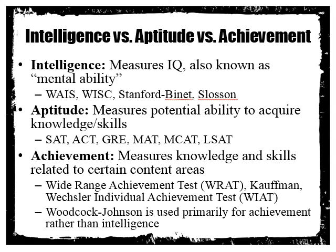Intelligence testing measures what's known as IQ, or intelligence quotient, also known as mental ability. Tests that measure this include the Wechsler Adult Intelligence Scale, the Wechsler Intelligence Scale for Children, the Stanford-Binet, and the Slosson, which is a smaller, more reduced intellectual test. Basically, we're trying to get at a person's verbal IQ — their ability to process verbal information, their understanding, their fund of knowledge — as well as their processing speed, their ability to perform mathematical calculations mentally, and their spatial intelligence and awareness.